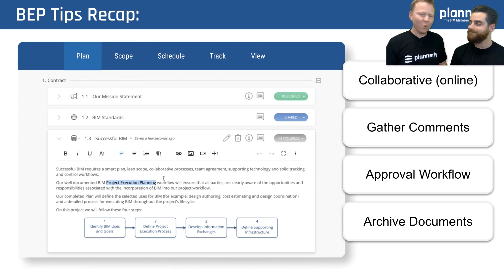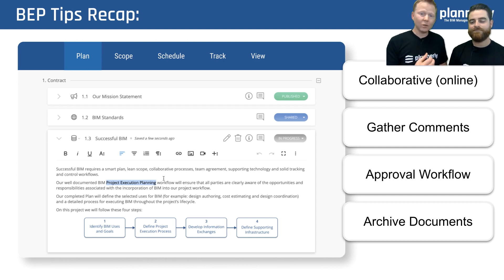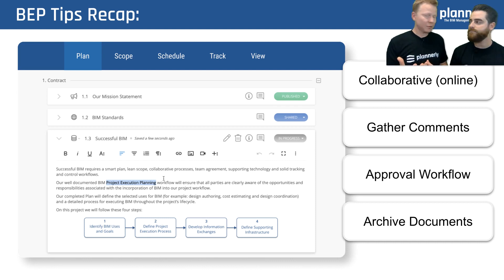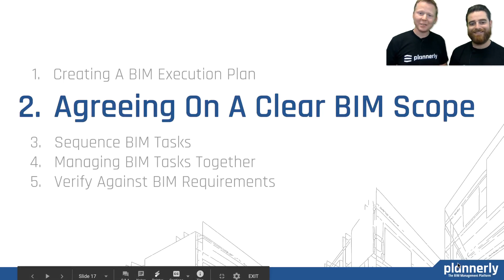So quickly recapping on number one — BIM execution planning and helping it to be successful as part of your BIM management workflow. We see huge success when it's online and collaborative. We see much more buy-in when people's comments are part of the documenting process, keeping them along the ride rather than disparate and disconnected. Having an approval process in bite-sized form — approving certain parts without approving everything at once — and archiving along the way gives security in knowing what versions have been released. And being able to access it because it's always live, always online, is really important.